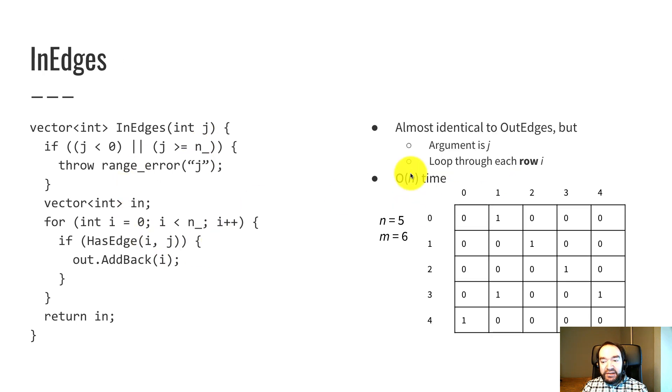Finally, in edges is basically the same thing. But instead of looping through all of the columns of a row, instead, I'm given a column j and I need to loop through all the rows of that column. So to compute the in edges of vertex one, I need to go to column one, loop through all the rows.